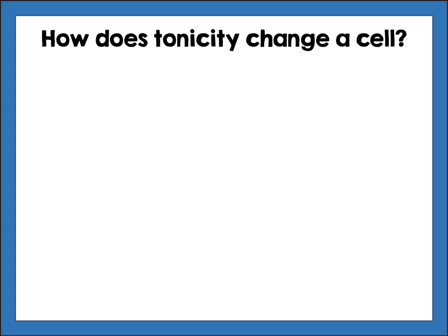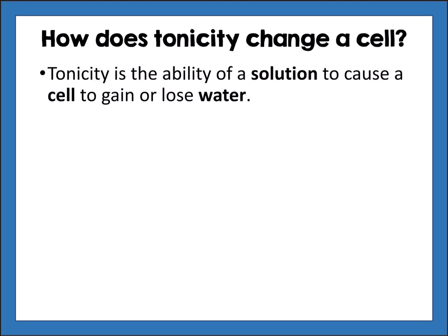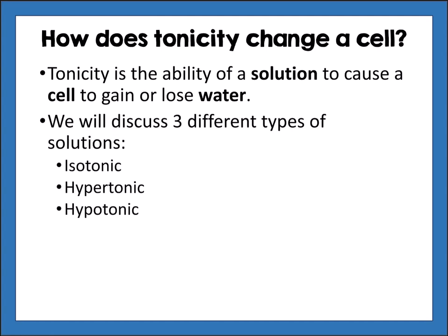How does osmosis affect a cell? This has to do with something called tonicity — the ability of a solution to cause a cell to gain or lose water. We will discuss three different types of solutions: isotonic, hypertonic, and hypotonic solutions, which are different ways of explaining the tonicity of a cell and how water moves because of osmosis.